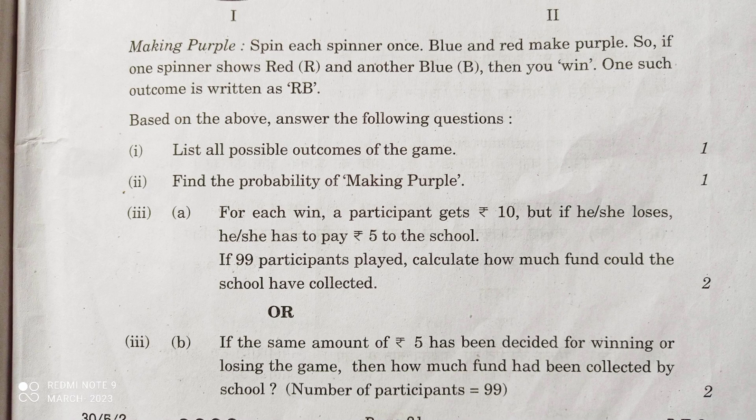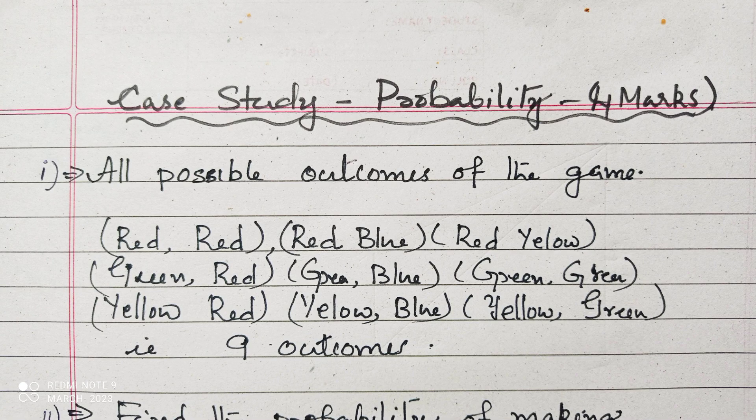The first question: list all the possible outcomes of the game. The possible outcomes are: red-red, red-blue, red-yellow, green-red, green-blue, green-green, yellow-red, yellow-blue, yellow-green. There are nine outcomes in total.